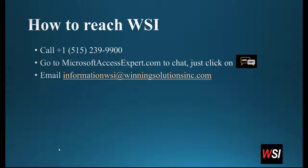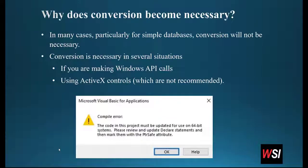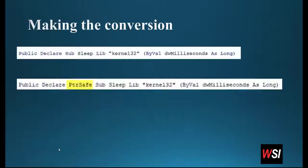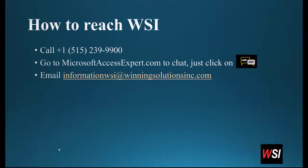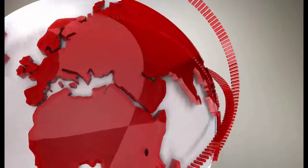Now you know what happens when you get this error message. If you were running a database on an old computer that had 32-bit Office and now you get a brand new computer, you start loading the database and get this error message — that is what happened. You went from 32-bit Office to 64-bit, and there are elements in your database that will not function without making those modifications. I hope this helps. Please let us know if you have any questions — you can also leave questions in the comments below. Please remember to like and subscribe and enjoy the rest of your day. Thank you for watching.